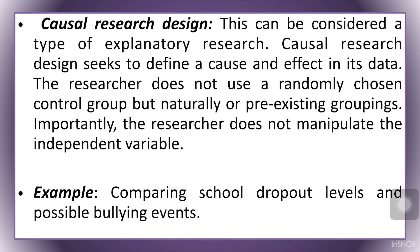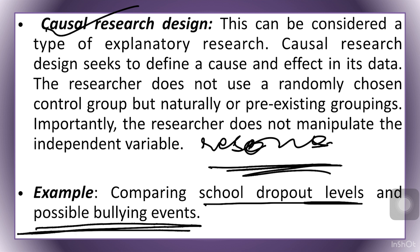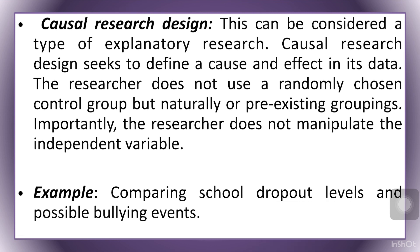Next is causal research design. In this we try to find out the reasons for certain causes. An example is comparing school dropout levels and possible bullying events — there is a relationship and we try to explore the cause. Basically, we are finding the cause and effect in the data set.